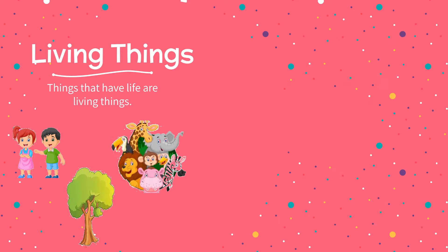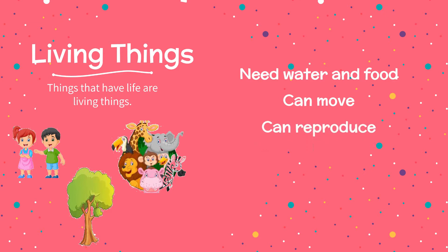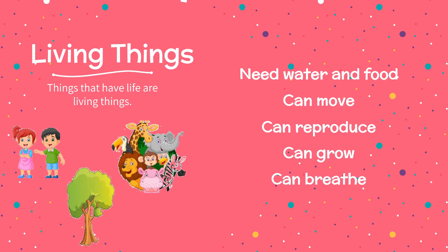There are 5 characteristics of living things. Living things need water and food, living things can move, living things can reproduce, living things can grow, and living things can breathe.